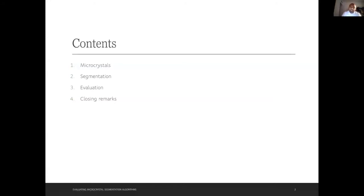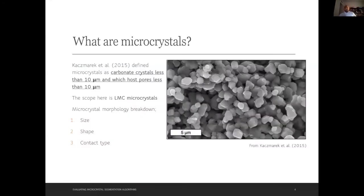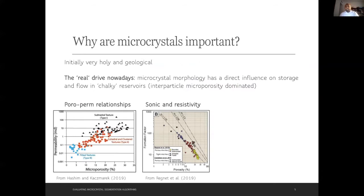What are micro crystals? This is an incredibly loaded and ongoing question, but for the purpose of this talk I'm going with the cosmetic definition: low-Mg calcite crystals less than 10 microns in size, hosting pores less than 10 microns. As you can see in this SEM rock chip image, the main things we focus on are the morphology — mainly the size, shape, and contact type.